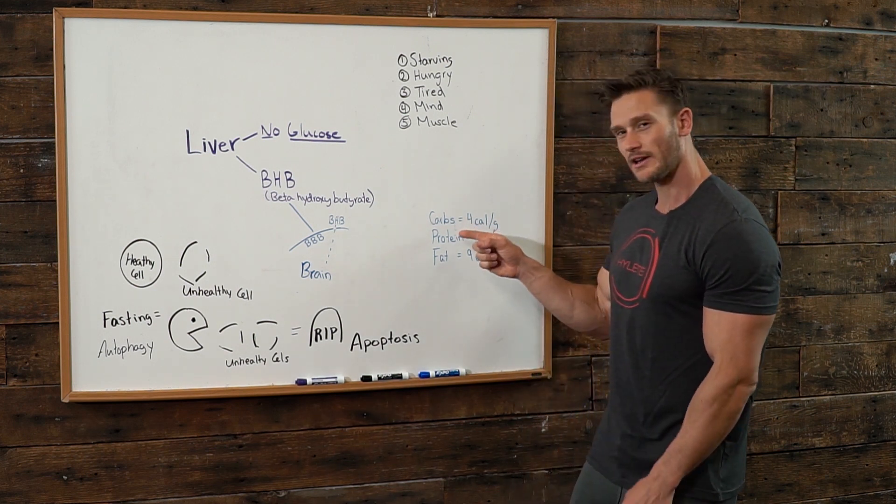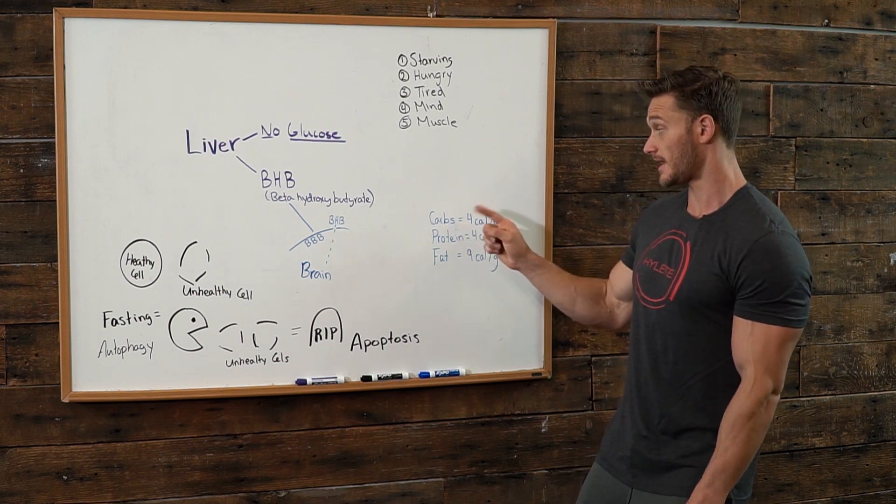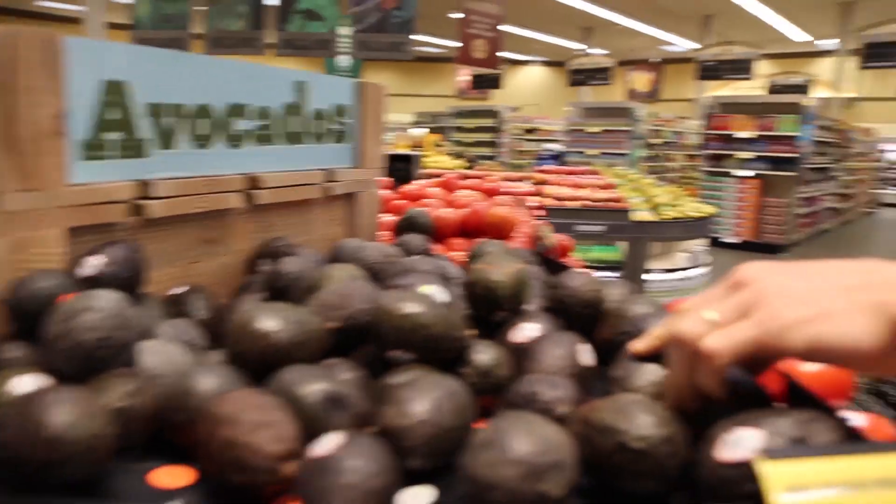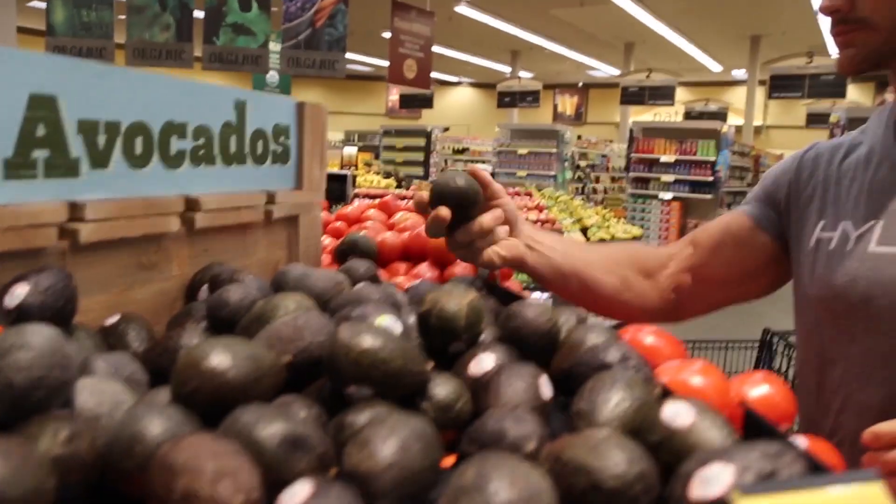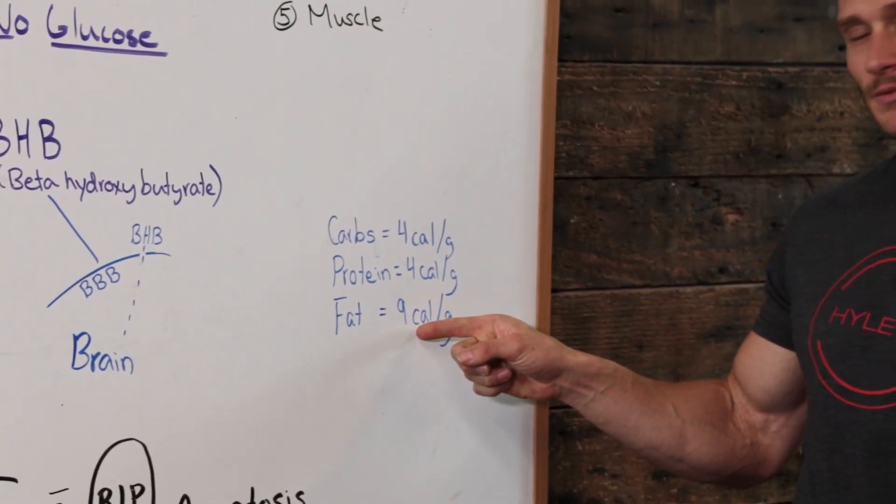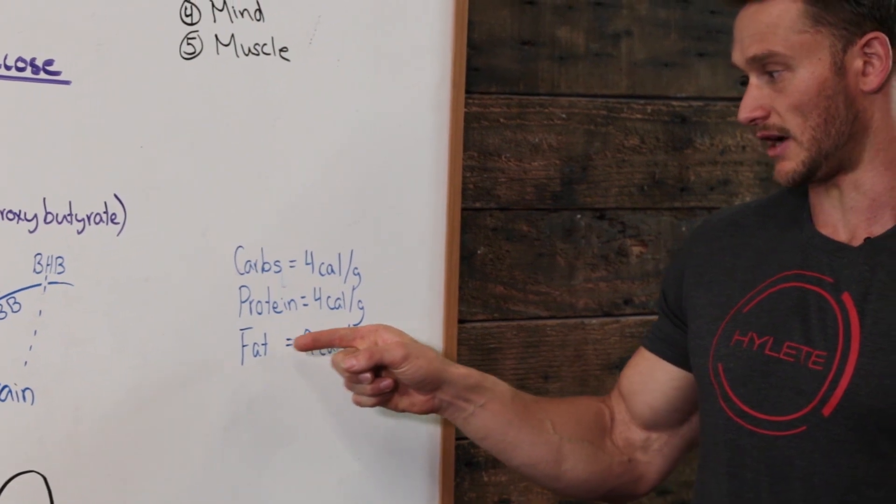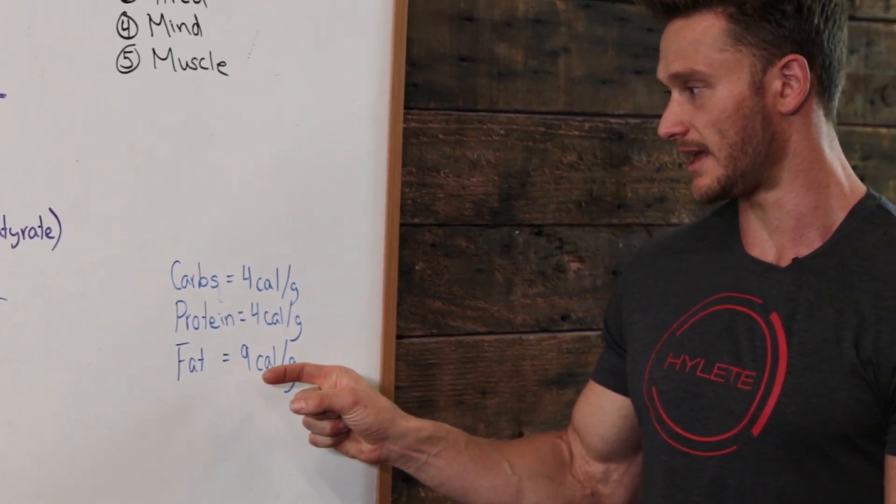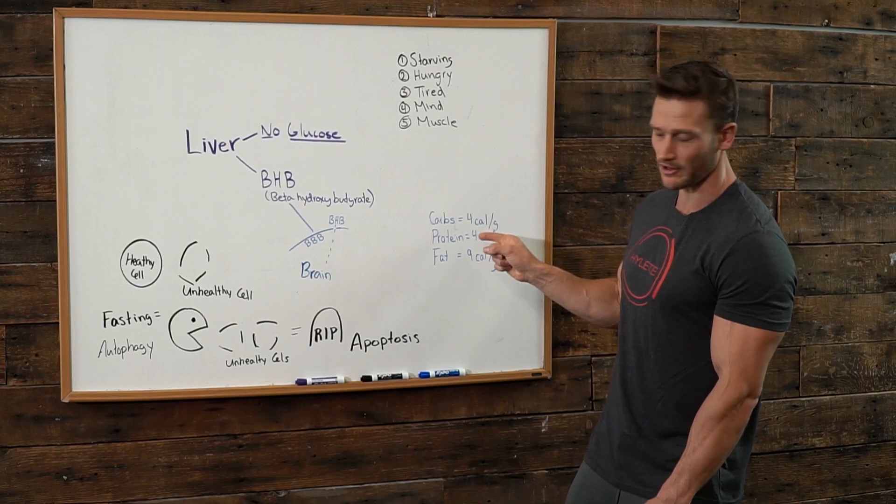Well, get this. When you're eating a normal diet, you have carbs that have four calories per gram. Then you have protein that has four calories per gram. Then you have fat that has nine calories per gram. Well, think about it like this. If this is an energy source and this is an energy source, which one's going to give you more energy? Well, fat, because it has more than double the actual energy. Calories are energy.